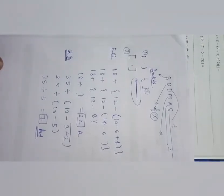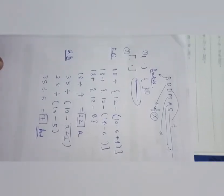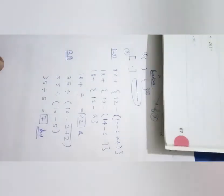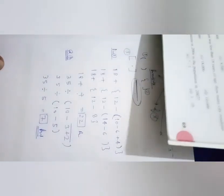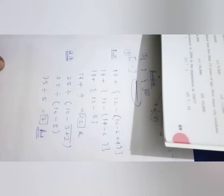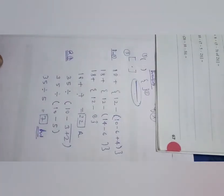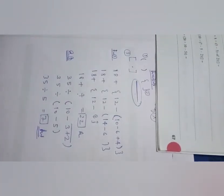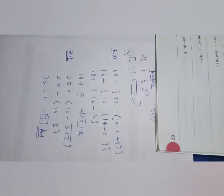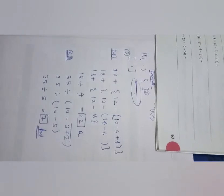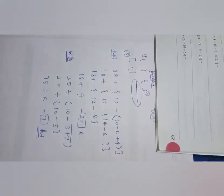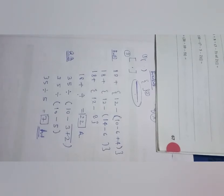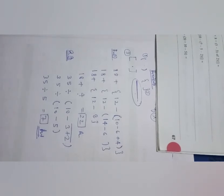Similarly, you have to solve question numbers 2, 3, 4, 5, and 6 from the textbook in your rough notebook, then write the answers directly in the textbook on page number 67. For today's homework, complete chapter number 26, BODMAS rule, page number 67, in your aptitude textbook. Thank you everyone, have a nice day.